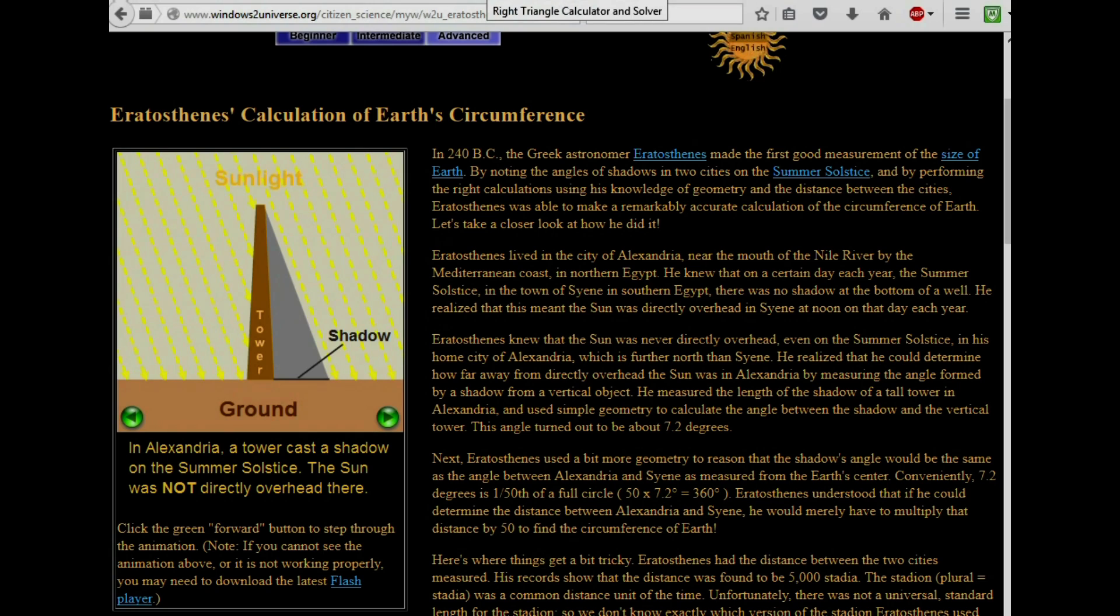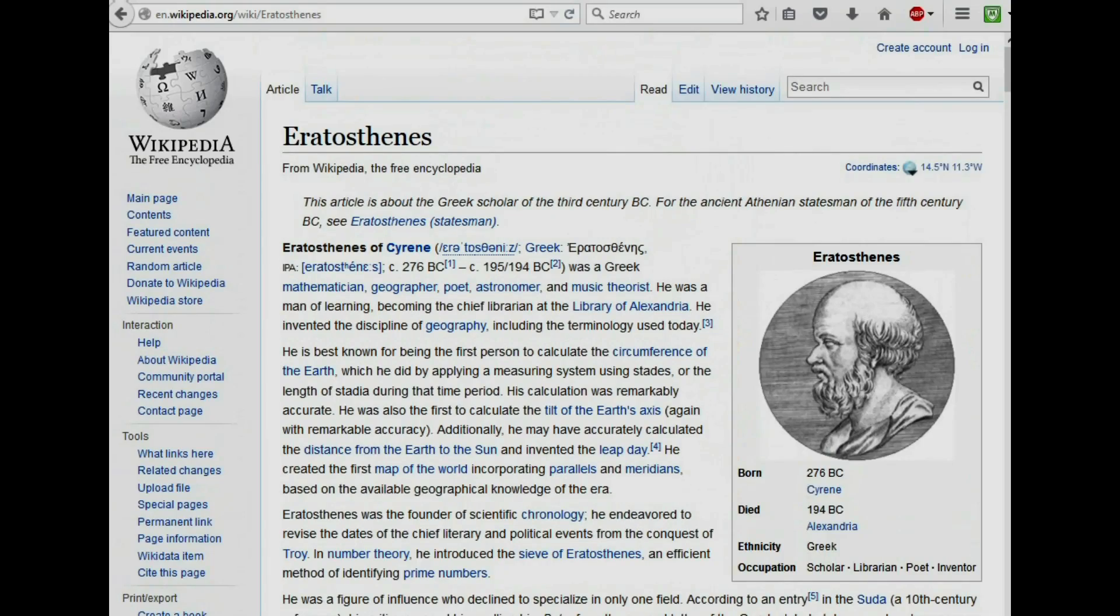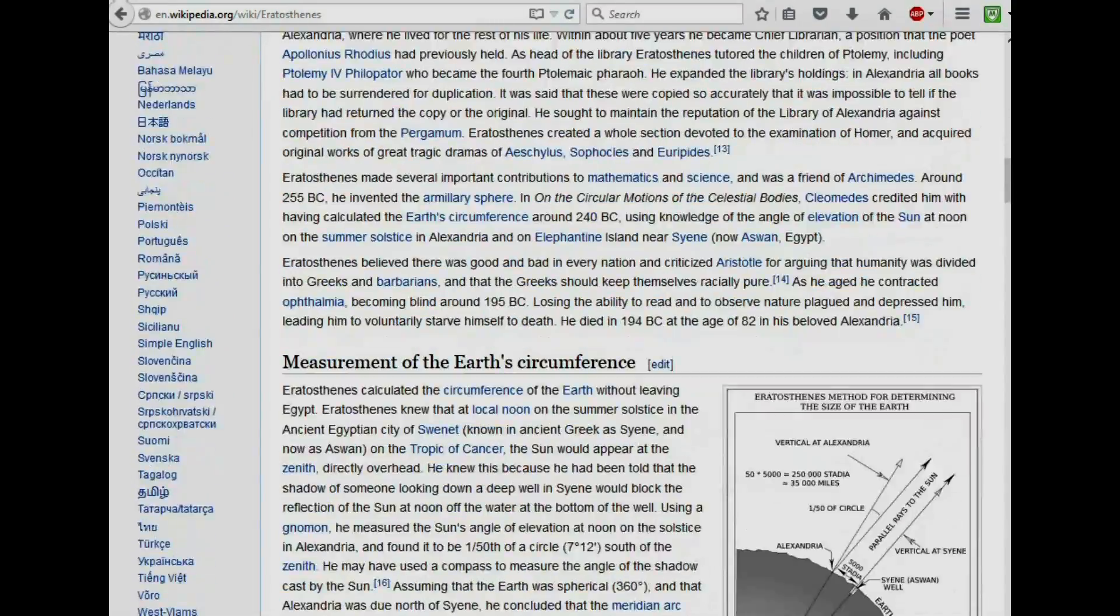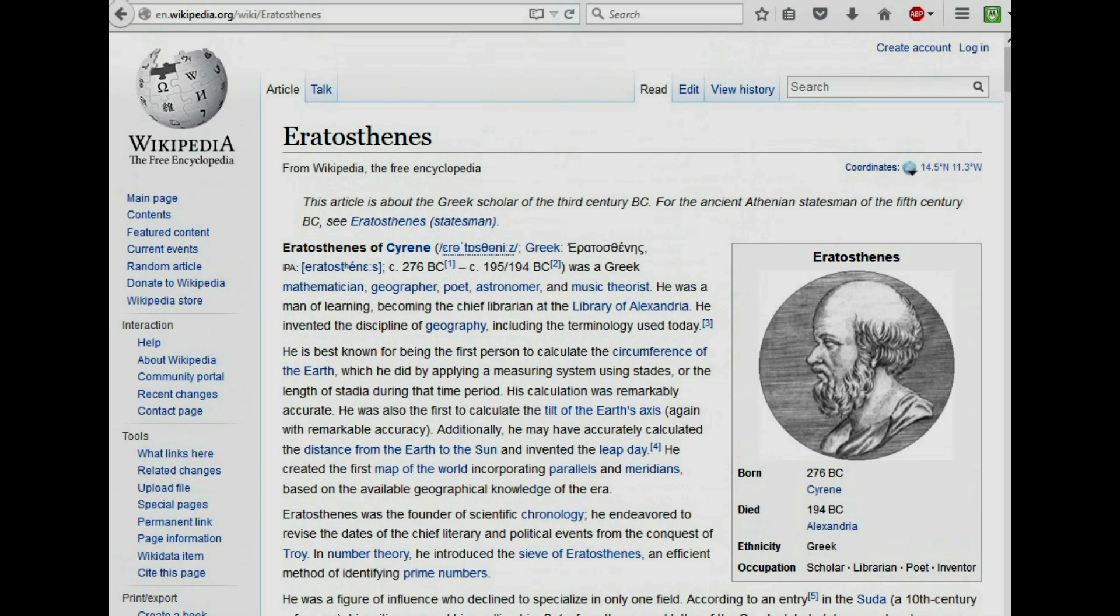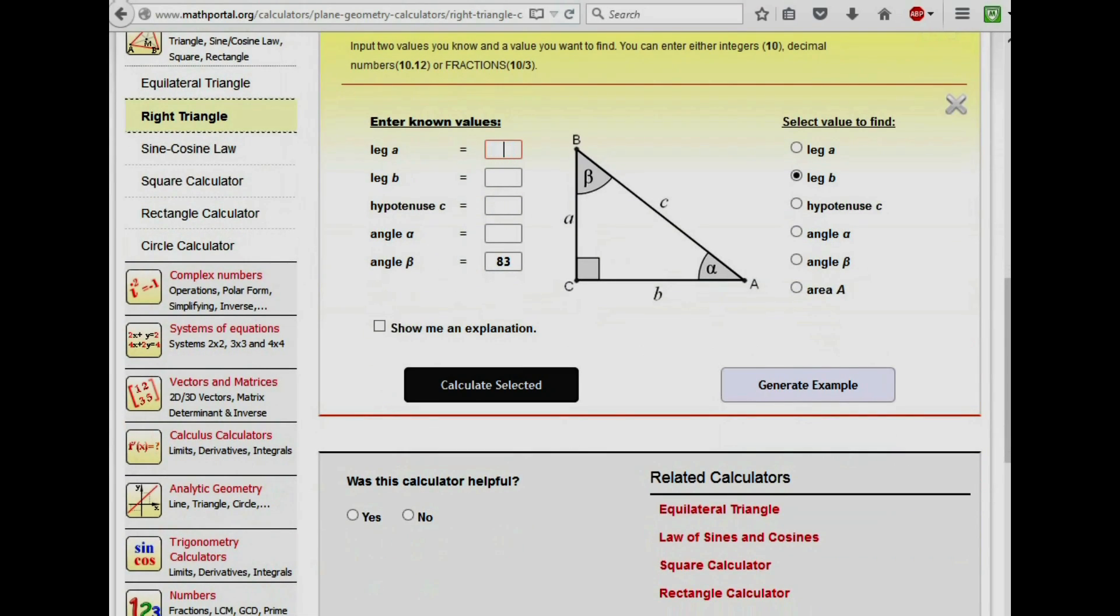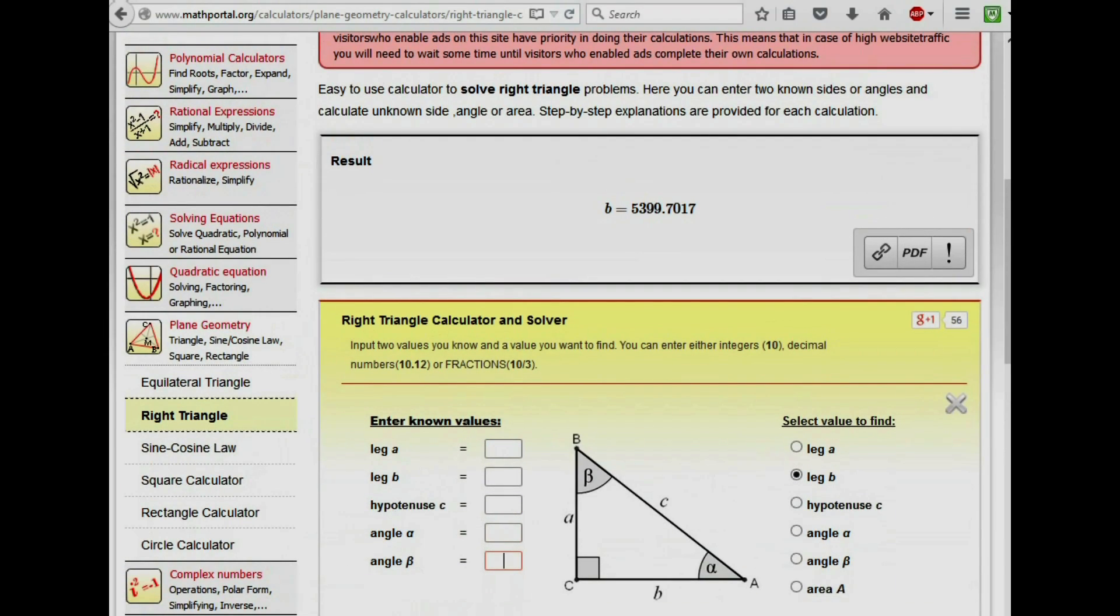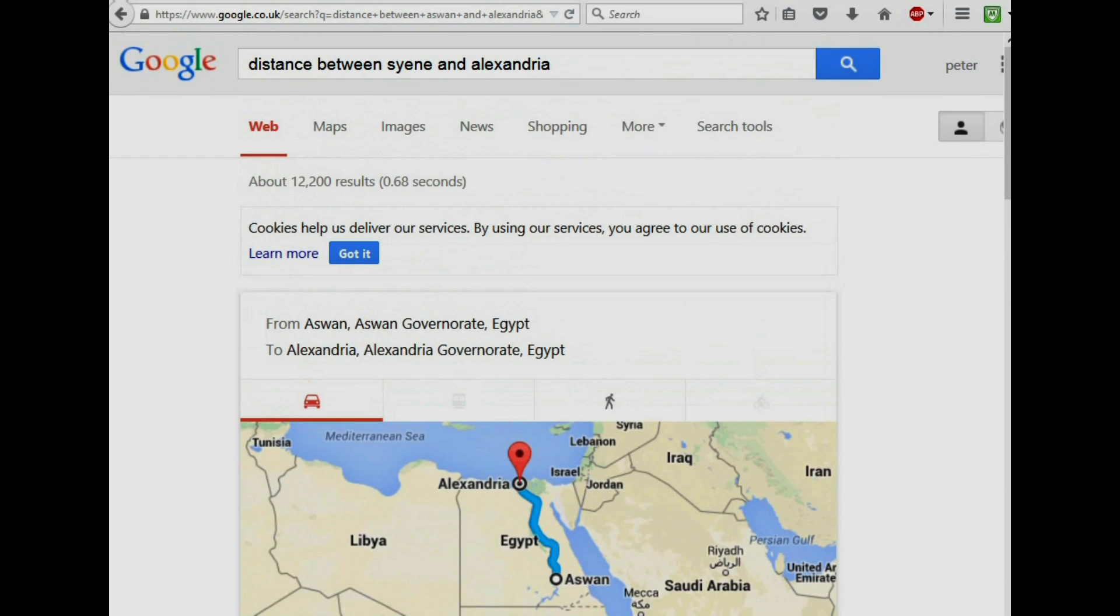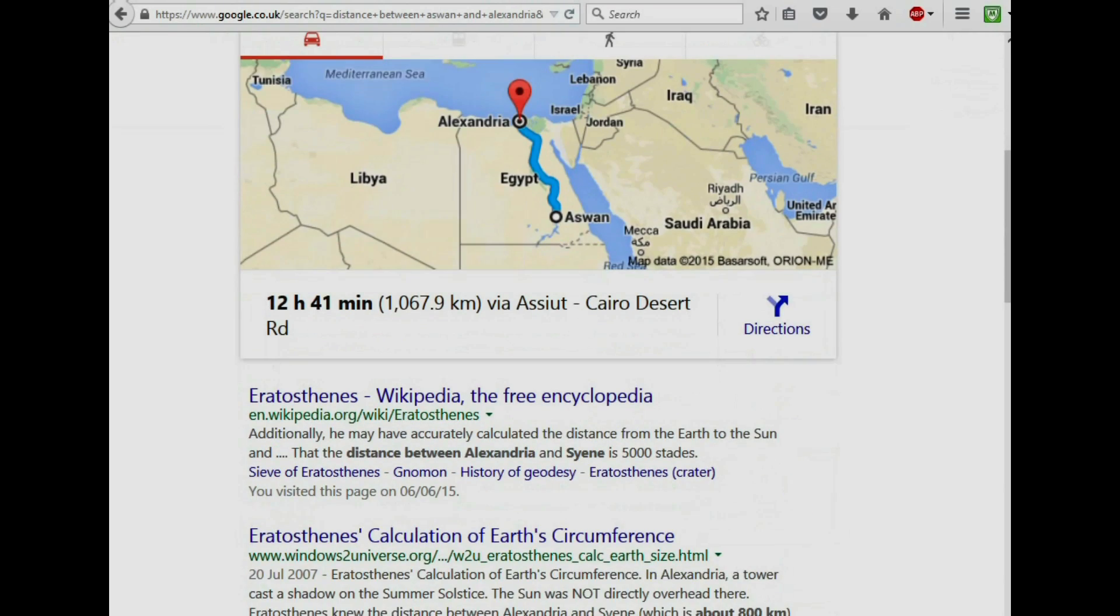But what is overlooked by even this page here on Wikipedia, there's nothing here at all. So what we're going to do is that we are going to use this online calculator to be able to try and discover how far away the sun is from the Earth, using Eratosthenes' experiment. So I've just typed in distance between Syene and Alexandria, which is Aswan, and we've got a figure of 1,067 kilometers.